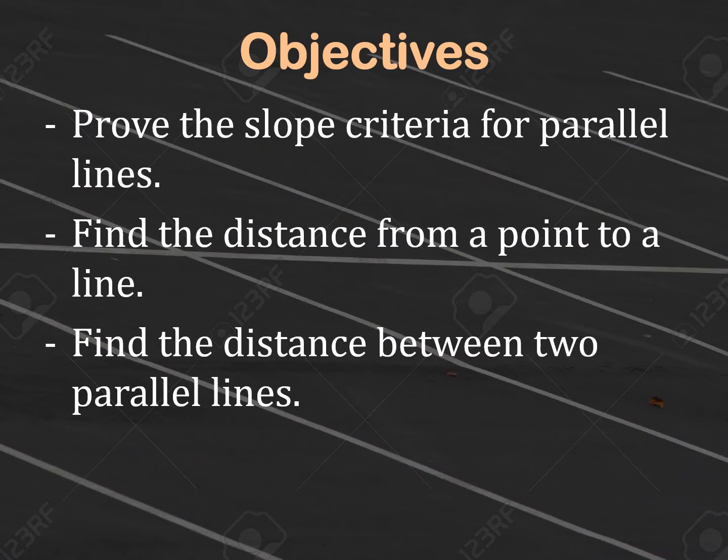In part 1, you found the distance from a point to a line. You had to first find the equation of the perpendicular line going through the given point. You would then have to find the point on the original line that intersects with the new line. Finally, you would have to find the distance between the given point and the point the two lines intersected. It took three parts and a lot of work.